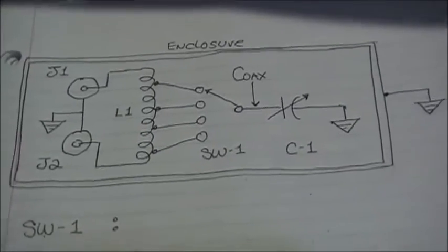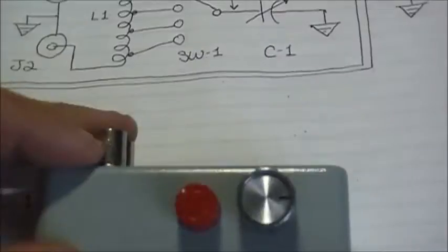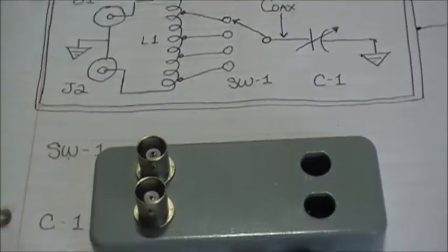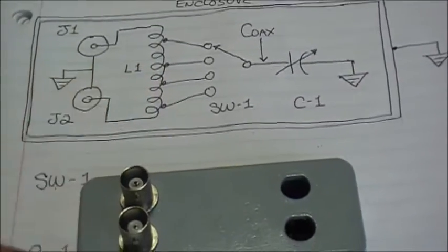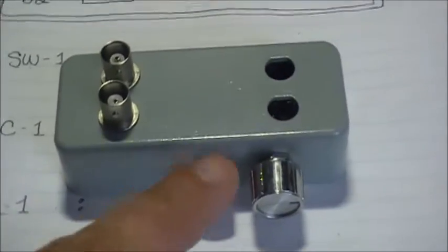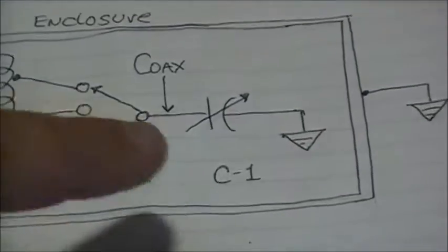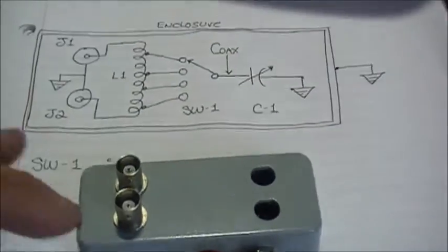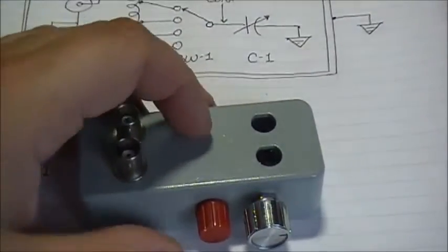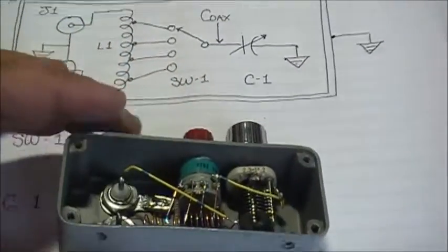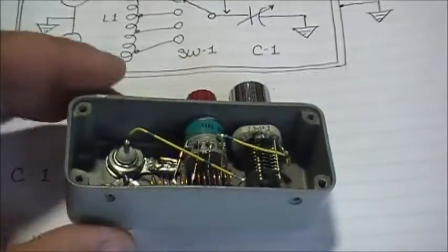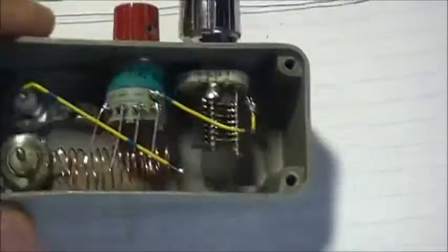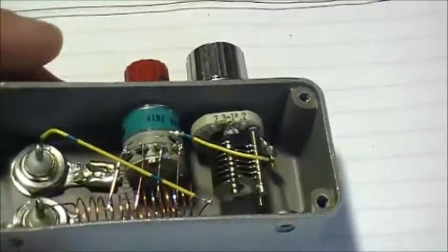She's built. Here's the unit - input, output. Here's your coil which is in here, the switch is the red one, the capacitor is this one here. What's it look like underneath? Here's what it looks like underneath. I think it turned out pretty good if you ask me.